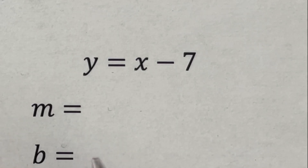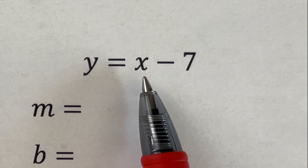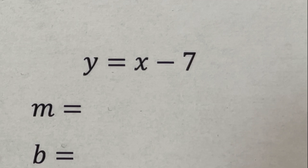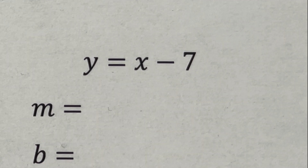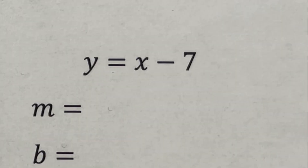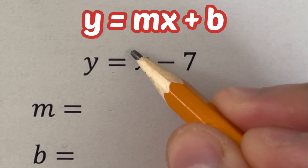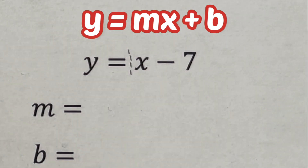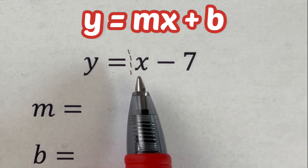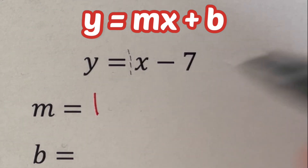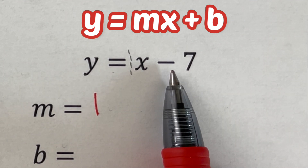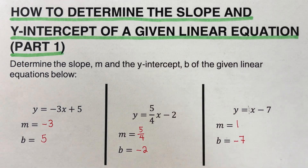The third equation is y = x - 1. Some might think there is no coefficient in front of the x, but remember: if no number is written in front of x, there is an invisible 1 there. So our slope m is 1, and our y-intercept b is negative 1. At this point, I encourage you to pause this video and try these problems on your own.